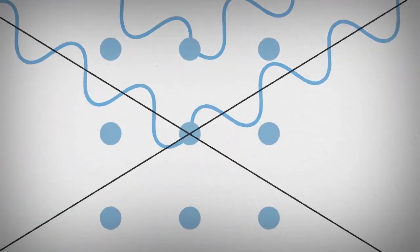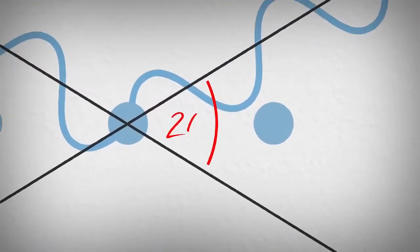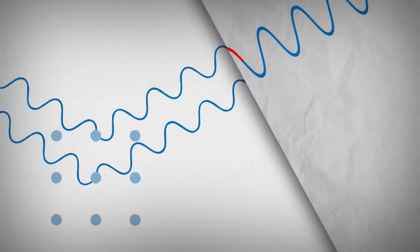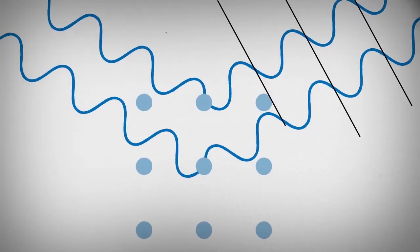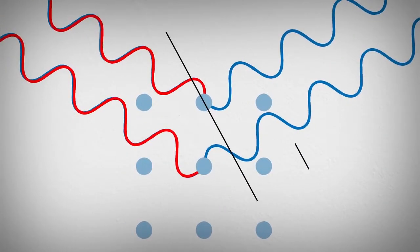The angle between the incident and the scattered beam is called two theta. In order for constructive interference to occur, the scattered waves must be in alignment, meaning that the second wave must travel a whole number of wavelengths.